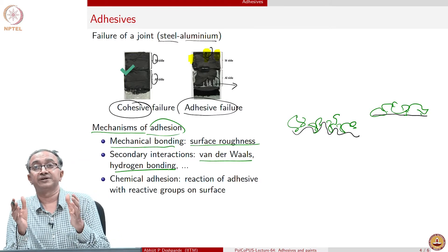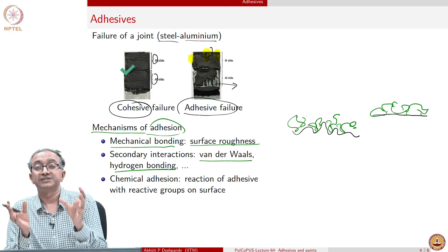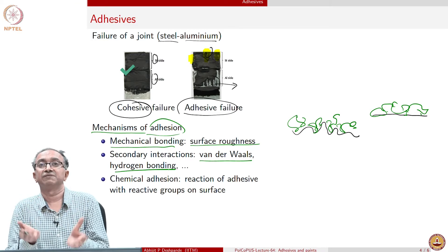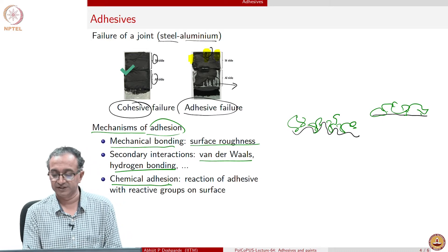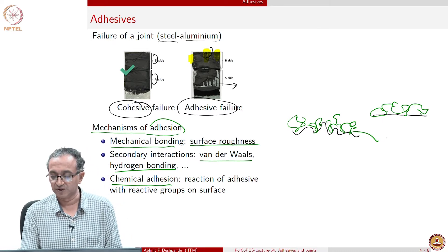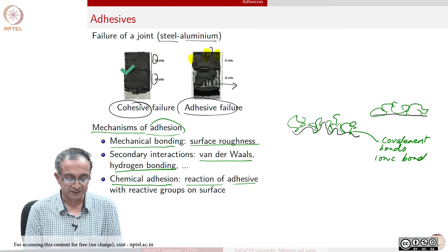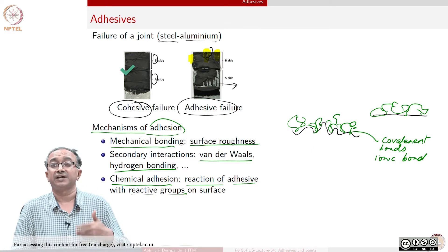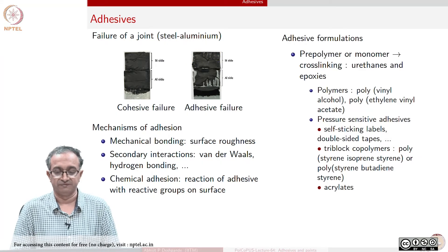If we take two different polymer composites and want to join them, the macromolecules of the two pieces being joined and the macromolecules of the adhesive need to interact with each other using van der Waals or other secondary interactions as the case may be. We can also have chemical adhesion where covalent bonds or ionic bonds are formed, such that the adhesive actually reacts with whatever active groups are present on the surface. Depending on the type of adhesive, each of these mechanisms or multiple mechanisms can be present for a single adhesive.